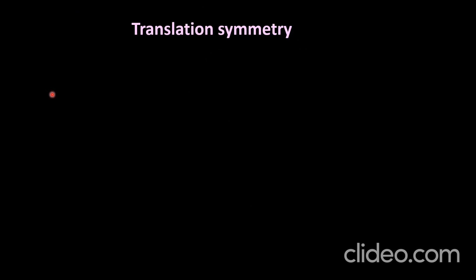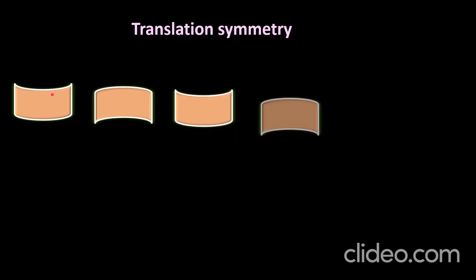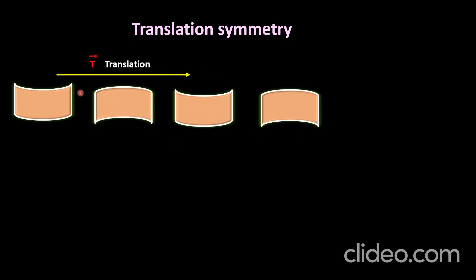To further understand translation symmetry, consider another set of motifs extended to infinity from left to right. There is a specific arrangement: this motif and that motif are the same, arranged in alternating order — so there is translation symmetry. If we apply the translation symmetry operation from one position to the next, we get the same pattern. This set of motifs possesses translation symmetry.